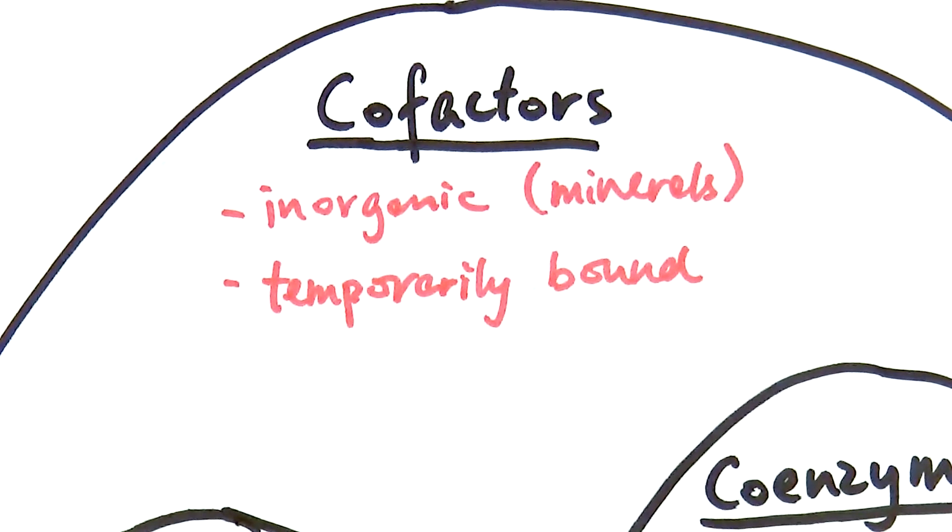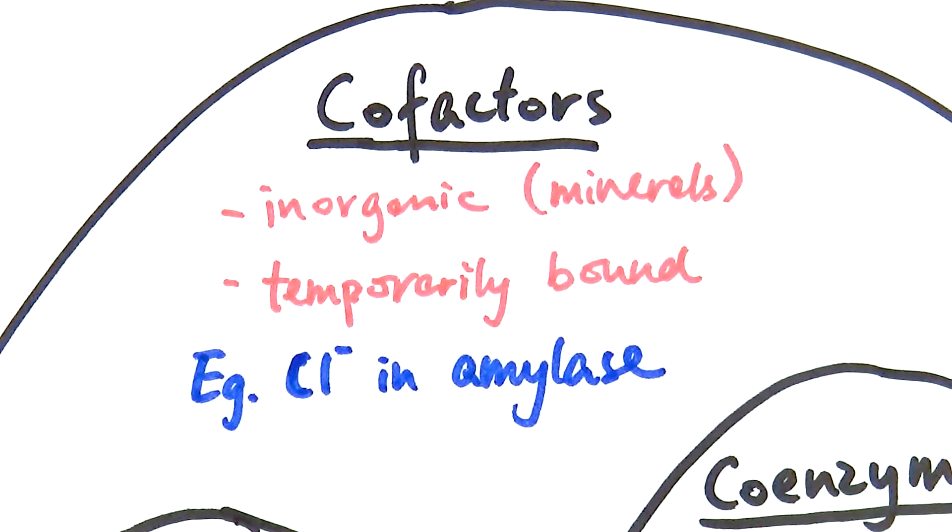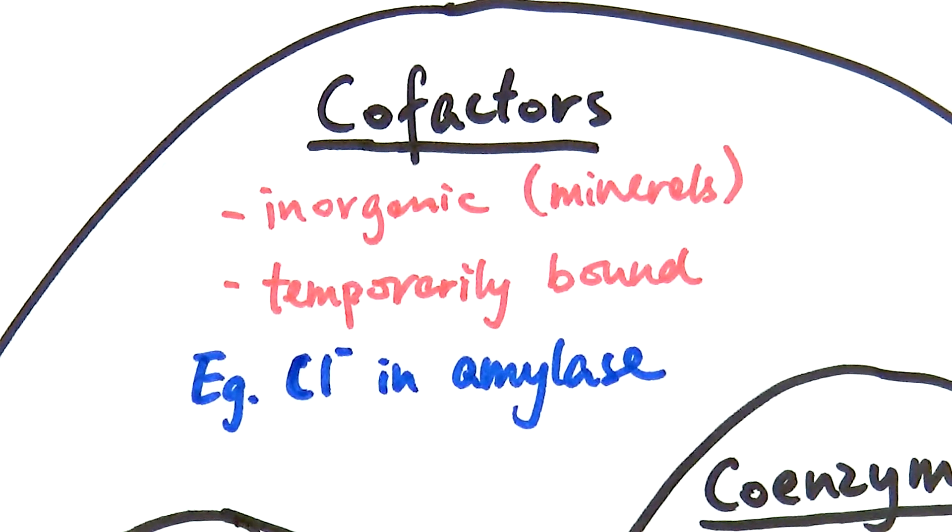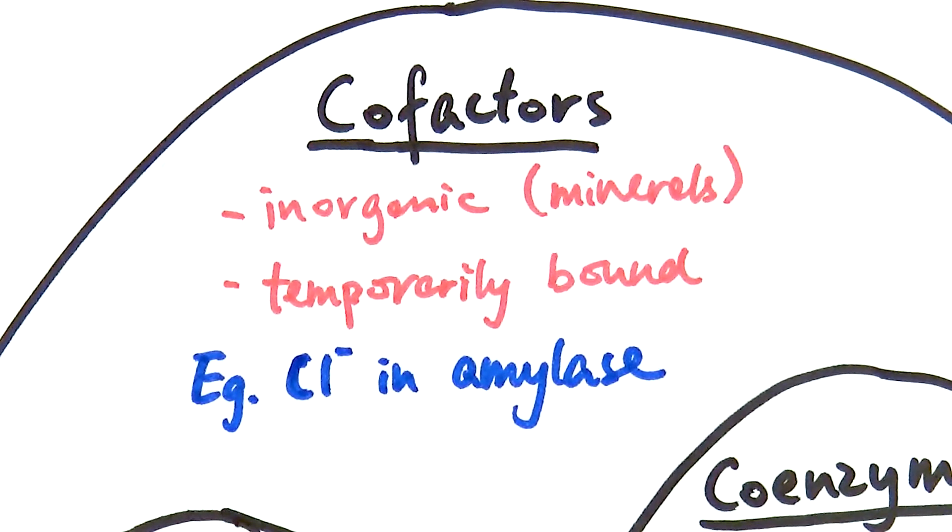That means they will probably be floating about, and when they bind to the enzyme, then they will activate it. An example that you might want to be aware of would be the chloride ions inside amylase. Chloride ions will bind to the amylase to activate it, to break down starch into maltose. Without chloride ions, amylase wouldn't actually work. So that's what cofactors are.